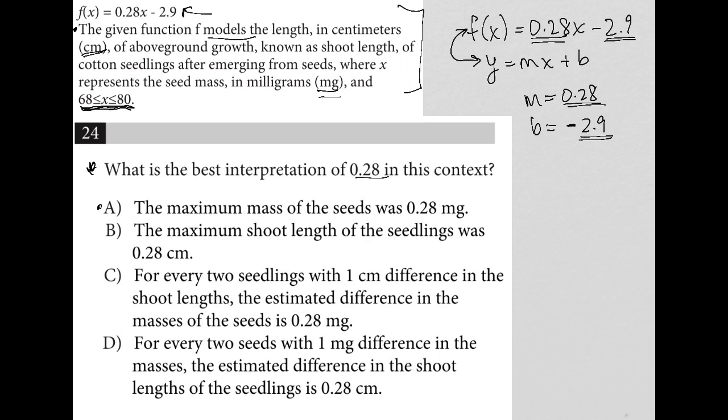Choice A: the maximum mass of the seed was 0.28 milligrams. Definitely not true. Mass is x and mass is between 68 and 80, so definitely not choice A. Choice B: the maximum shoot length of the seedlings was 0.28. No, also not true.